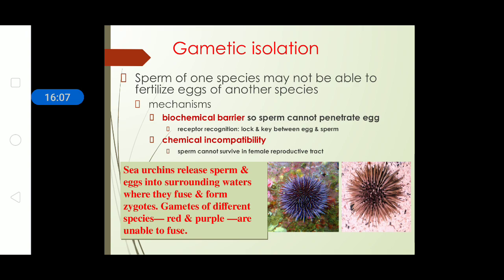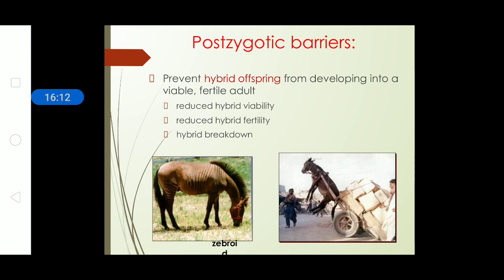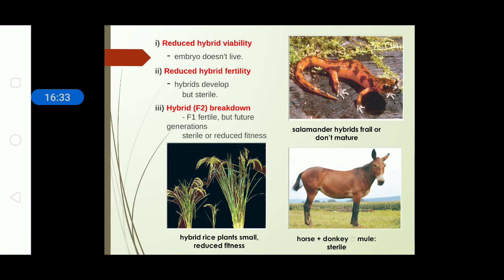In postzygotic barriers: a zebra hybrid of horse and zebra lacks physical strength — instead of pulling a cart it struggles, unlike horses or donkeys. In reduced hybrid viability, salamander hybrid trials do not mature — the hybrid has characters of both parents and is incompatible as it cannot determine which mode of action to follow. In reduced hybrid fertility, horse plus donkey gives a mule which is sterile — the mule resembles a donkey facially and a horse in body, but cannot fertilize or reproduce.